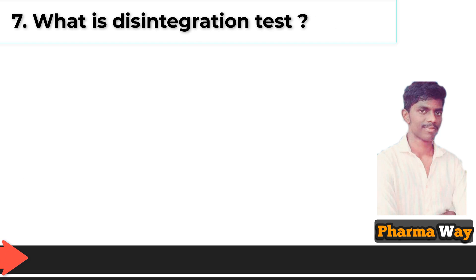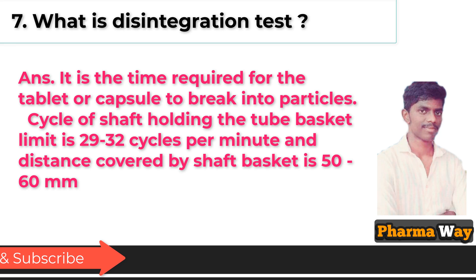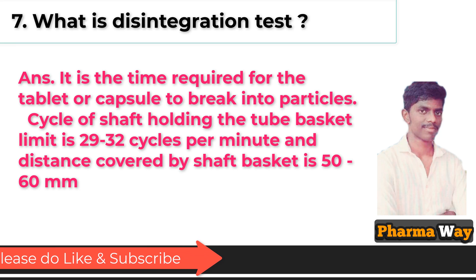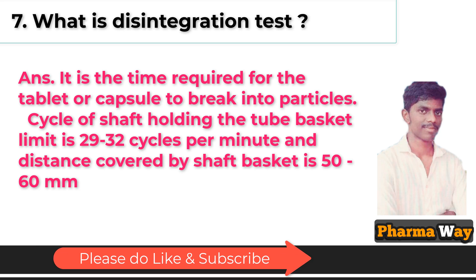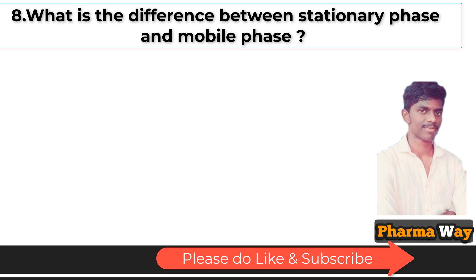What is the disintegration test? Answer: It is the time required for the tablet or capsule to break into particles. The cycle of the shaft holding the tube basket is 29 to 32 cycles per minute, and the distance covered by the shaft basket is 50 to 60 mm.